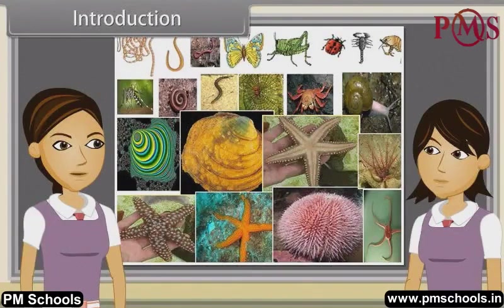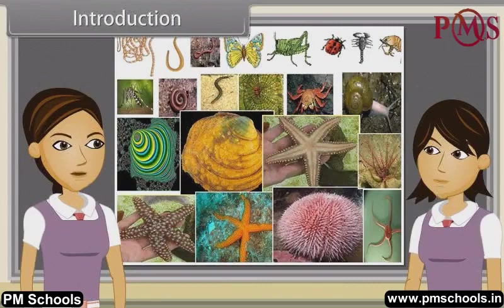Yes, now we are going to discuss characteristics of hemichordates, caudates, vertebrates, cyclostomata, chondrichthyes, osteichthyes, amphibians, reptilia, aves and mammalia.